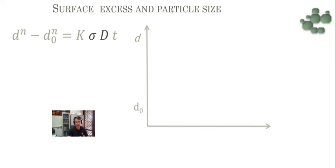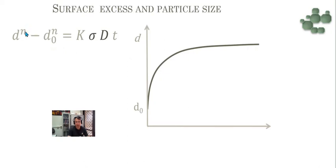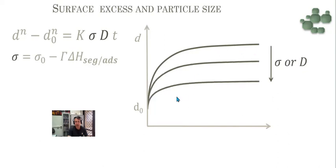One of the main consequences of surface excess is the stabilization of particle size. Following the law of particle growth, the particle size at time t depends on surface energy and diffusion. When you decrease the surface energy or diffusion, you have a decrease in the final particle size. This is because when you have a surface excess, you have a decrease of surface energy and then stabilization of particle size.